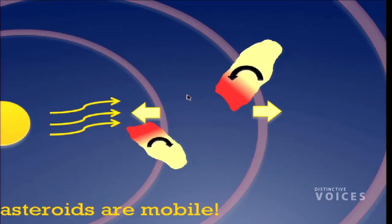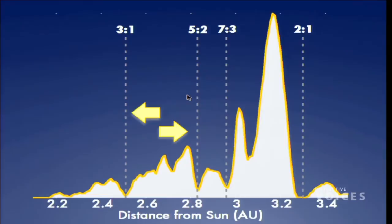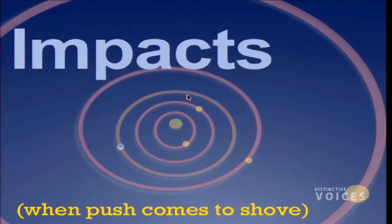Given that asteroids are mobile — moving around due to heating and re-emitting radiation — and entering resonances with Jupiter and becoming near-Earth asteroids, we know what's going to happen next. Near-Earth asteroids only live for 10 million years and most of them end up hitting a planet. We're emptying out the asteroid belt, sending them onto near-Earth orbits, and once they're there it's inevitable: we're going to get impacts.